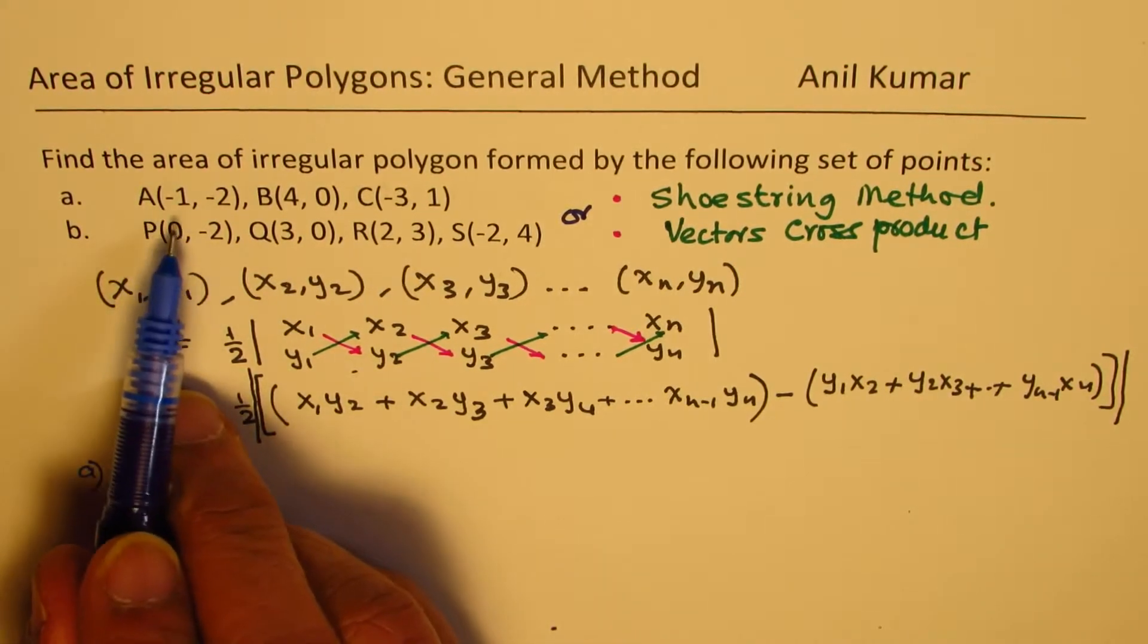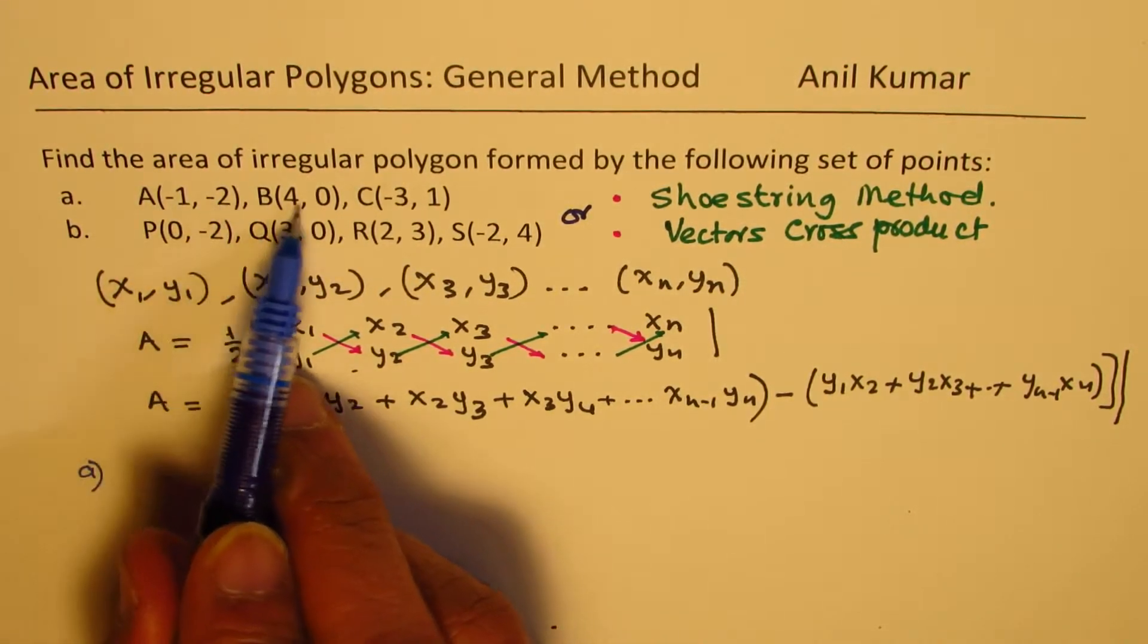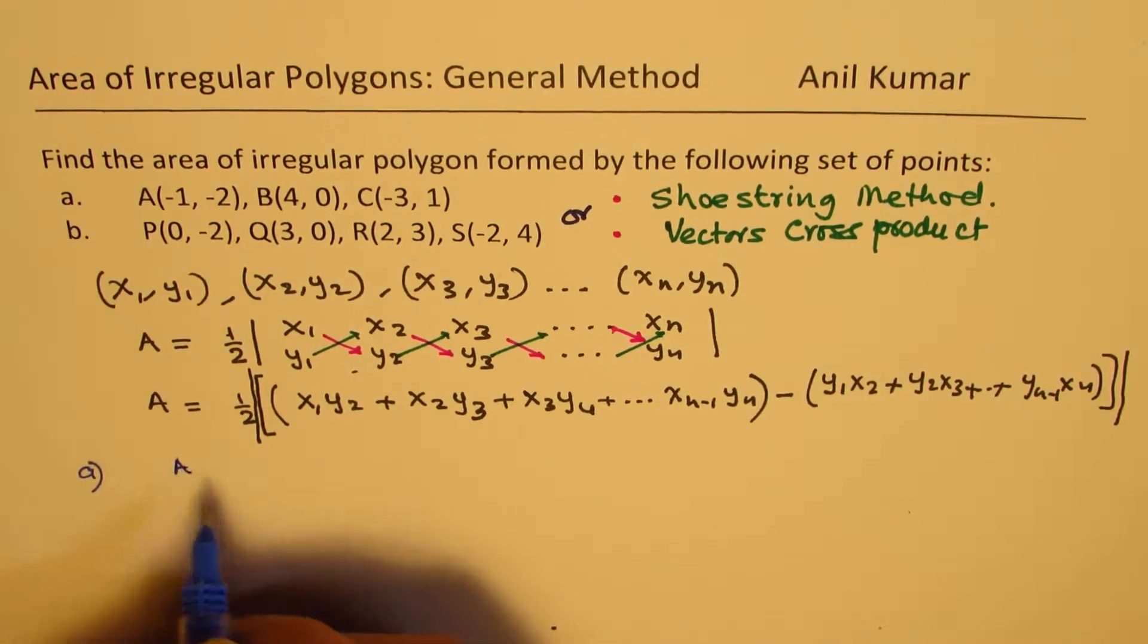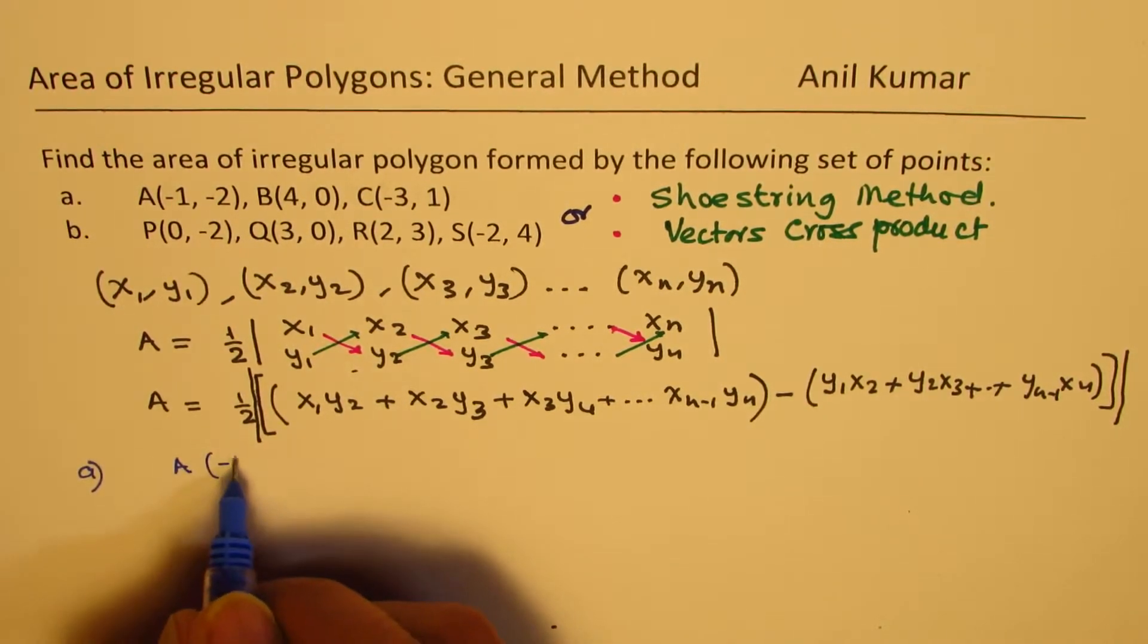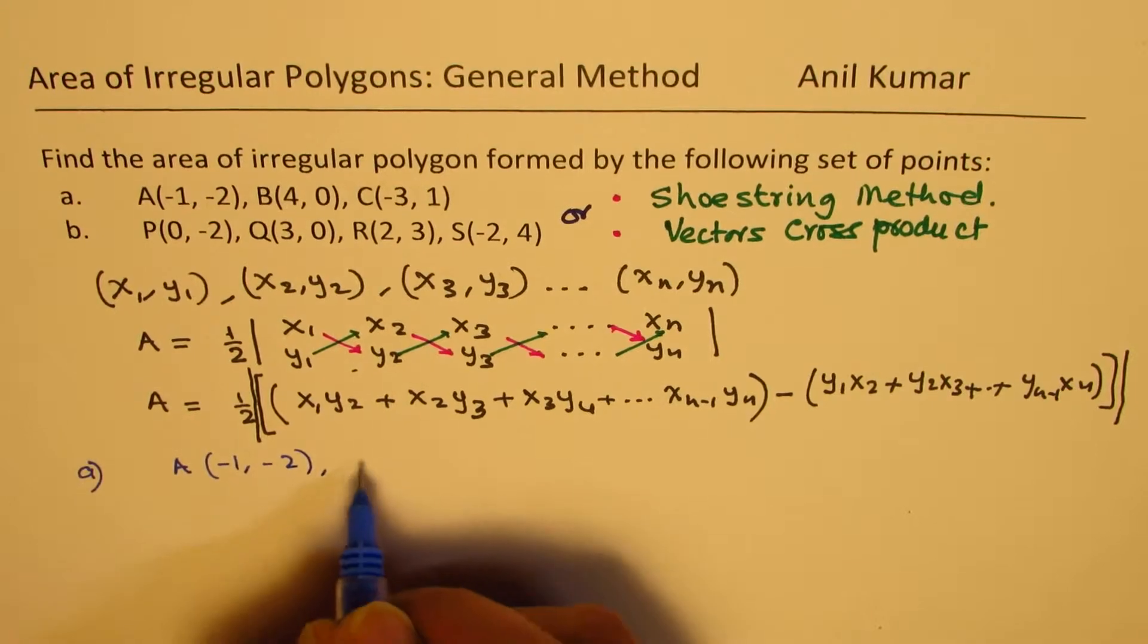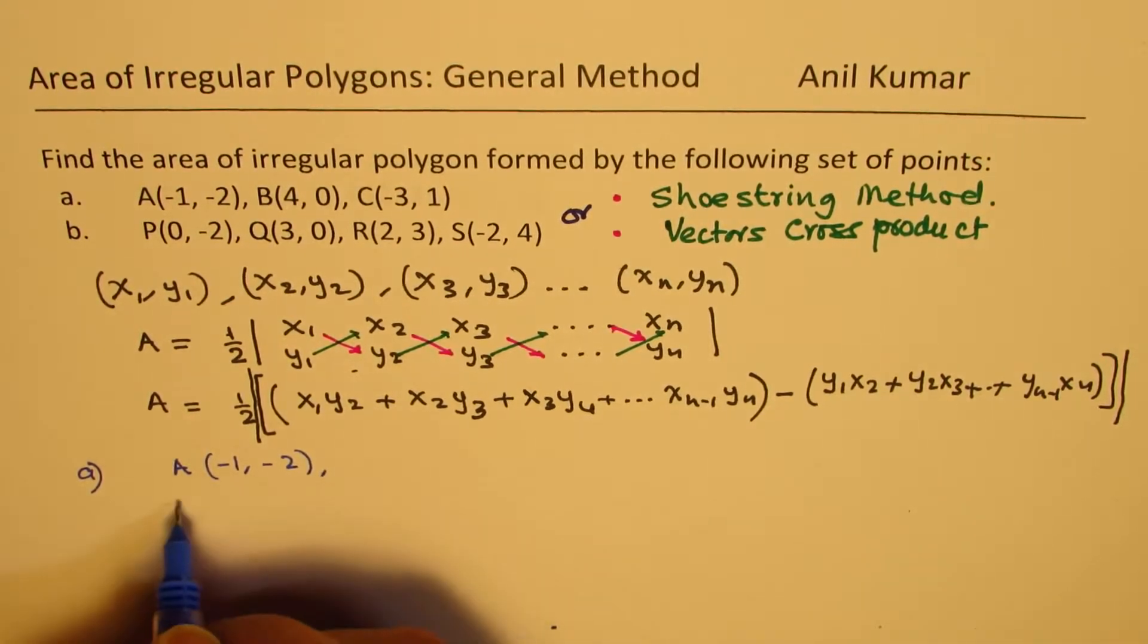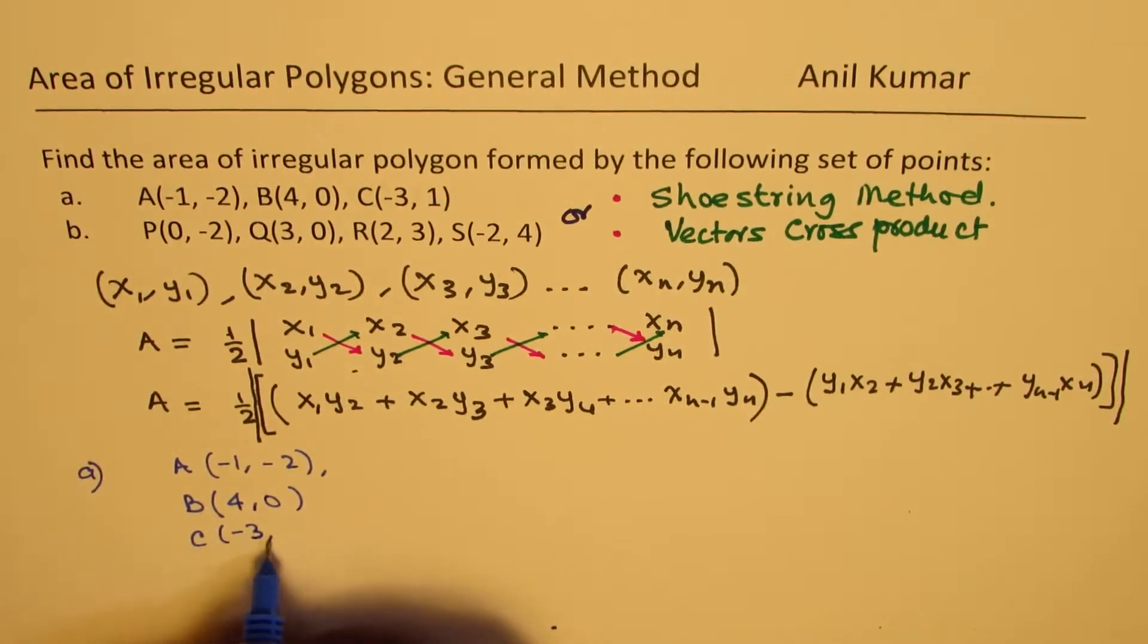Let's calculate the area when the coordinates are given to us as minus 1, minus 2. We have A, which is minus 1, minus 2, we have B, which is 4, 0, and C as minus 3, 1.